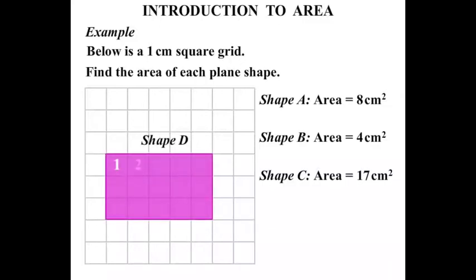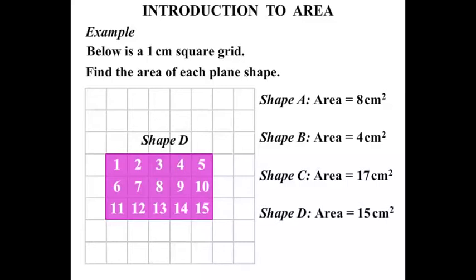One, two, three, four, five, six, seven, eight, nine, ten, eleven, twelve, thirteen, fourteen, fifteen. So shape D has an area of fifteen square centimeters.